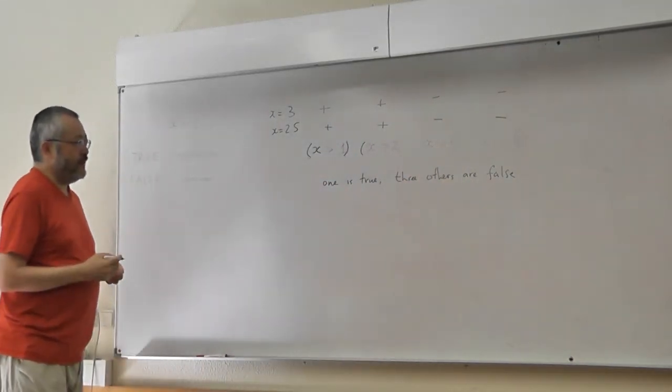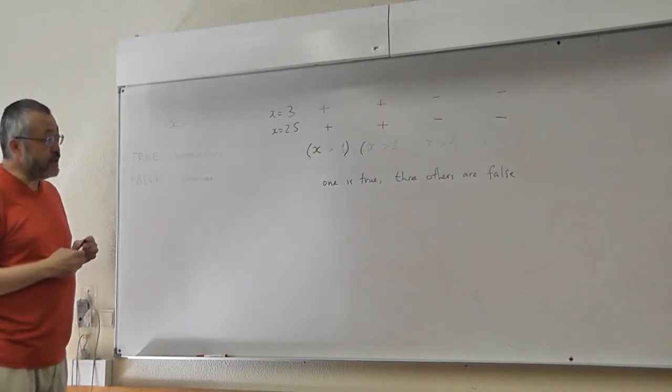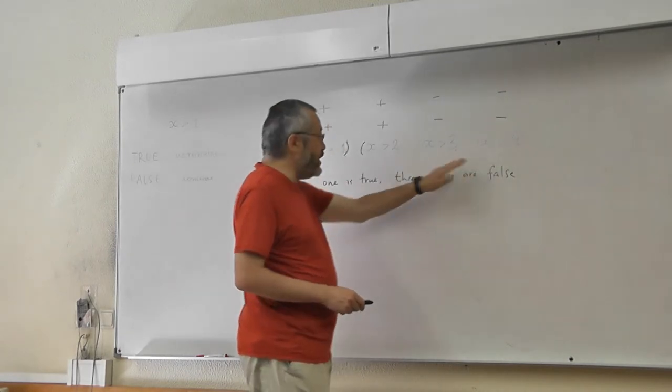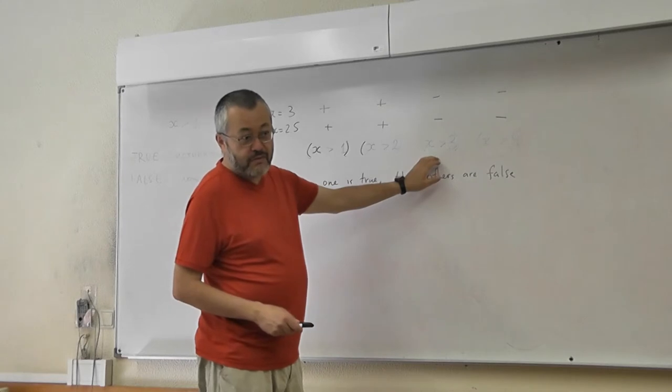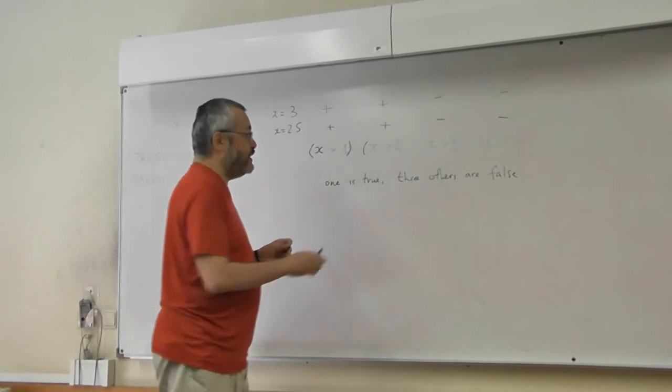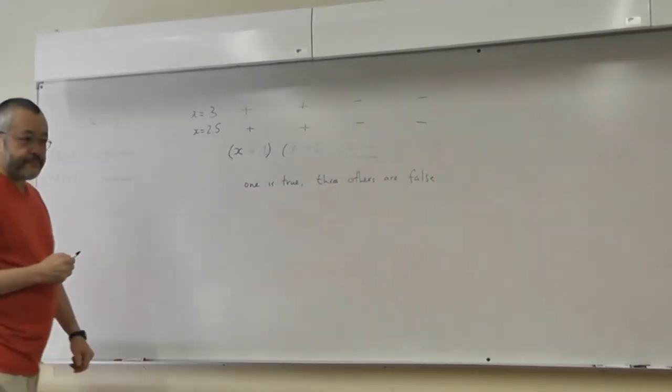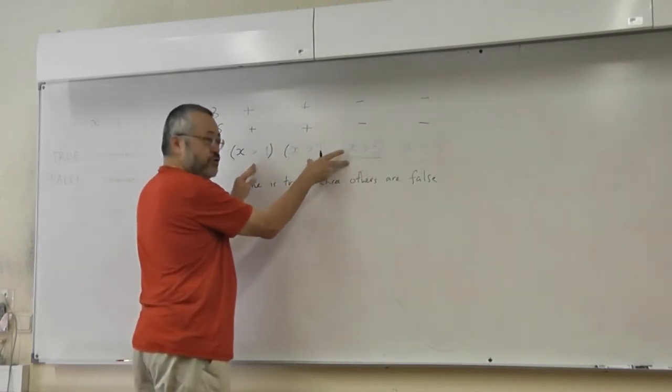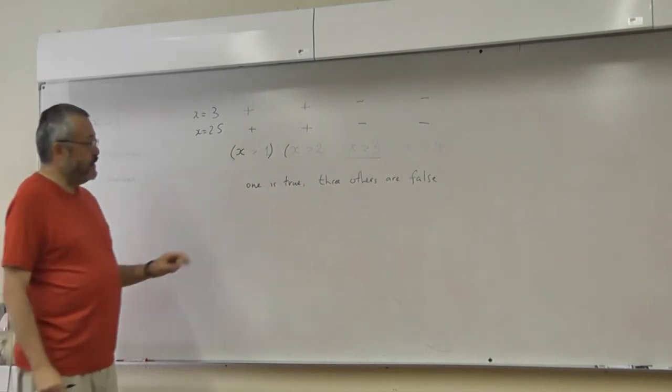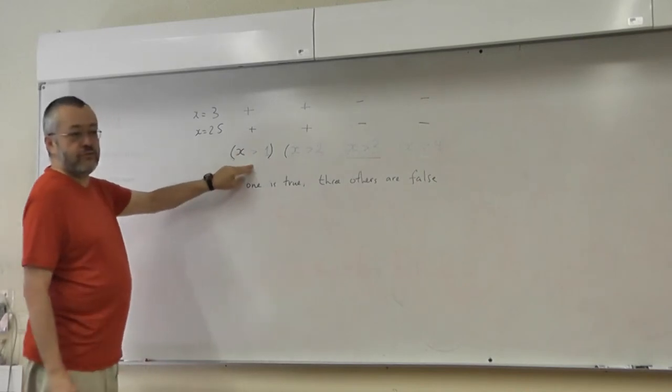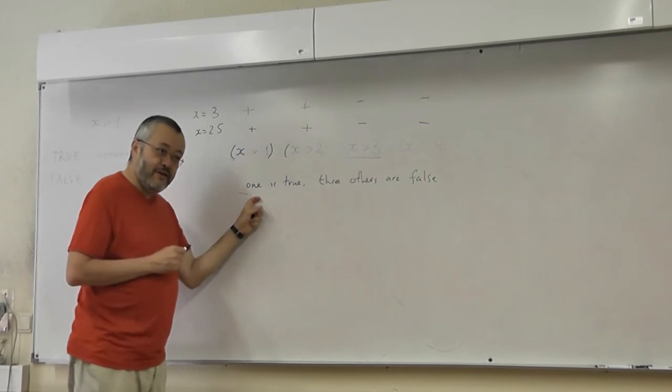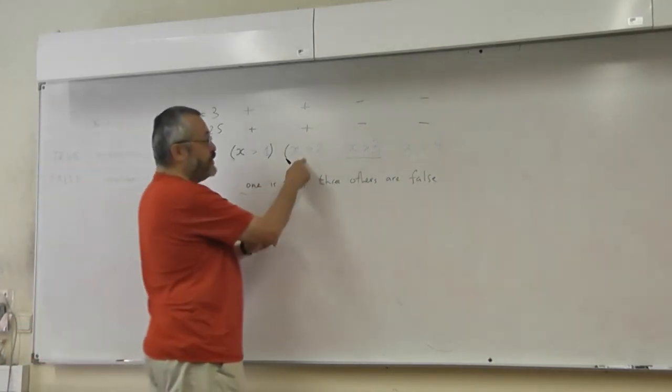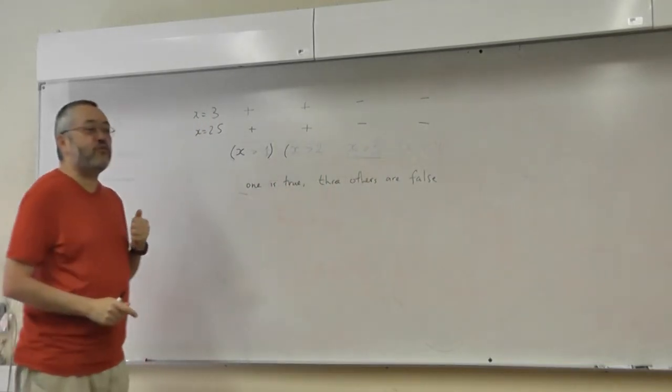But if x is greater than 4, then x is greater than one, two, and three. If this is true, then all four would be true. And if the third is true, then the first two must be true. And if the second is true, then the first is true. So, if we know that only one is true, what can we conclude? If this, this, or this is true, then the first is true too. So we get more than one true statement.